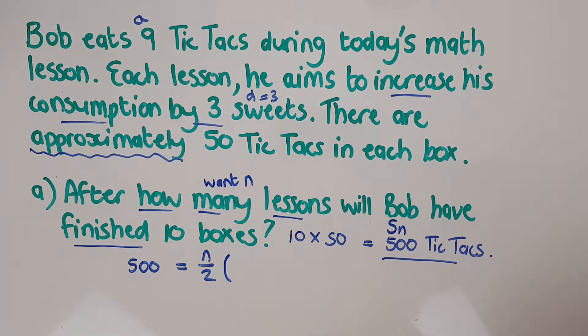And then it's two times nine, my a, plus n minus one d. I don't have n minus one. My d was three. N and n, I'm going to end up with a quadratic here. Oh well, always can use the formula.